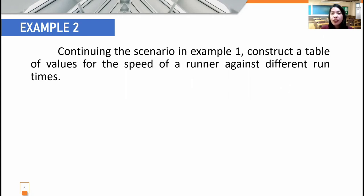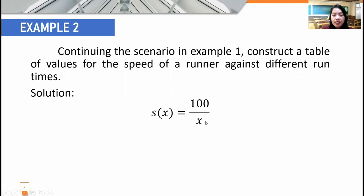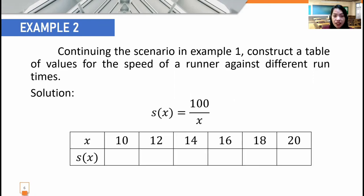In example number two, continuing the scenario in example number one, we are going to construct a table of values for the speed of a runner against different run times, using the function s of x equals 100 over x. To construct the table of values, we need numbers that x can take. In this scenario, we are not going to take negative numbers, because x represents time, which is always a positive number.